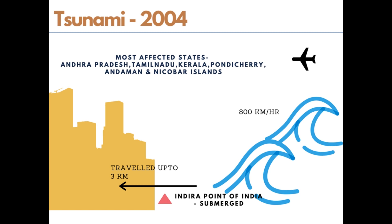Earthquakes cannot be predicted; however, a three-hour notice period can be given for a potential tsunami threat. Early warning systems exist across the Pacific Ocean but not in the Indian Ocean, as seismic activity is less here. The large damage to life and property was primarily a result of the lack of monitoring, early warning systems, and lack of knowledge about tsunamis among coast dwellers of the Indian Ocean. The first indication of a tsunami is the withdrawal of water from the coastal region, followed by a destructive wave.